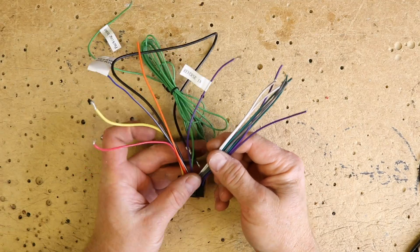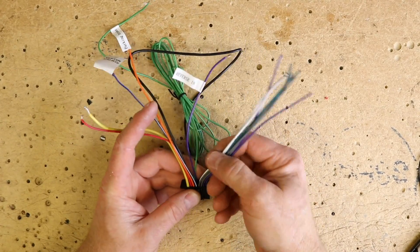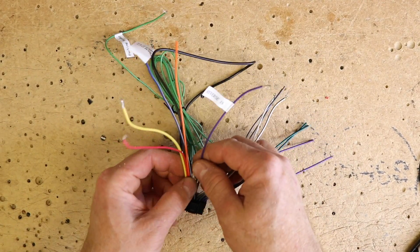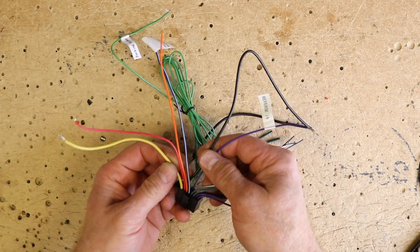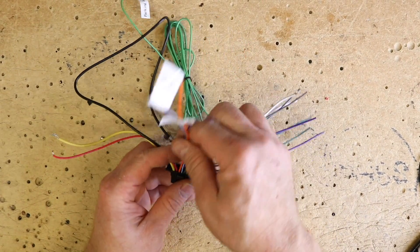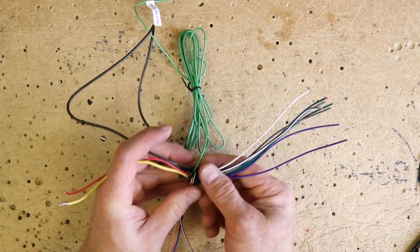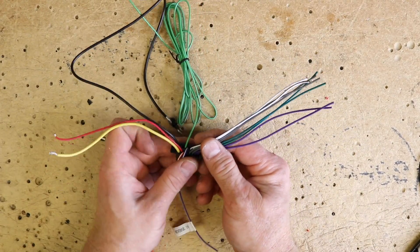Let's break this down into a few simple categories. Speaker, main power, and then accessory items. So you basically have three regions of the plug itself.